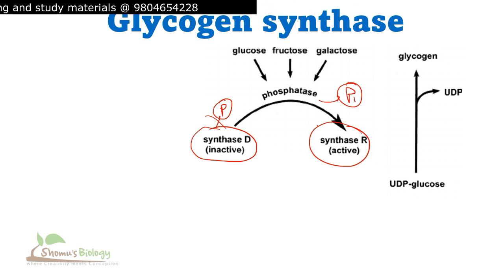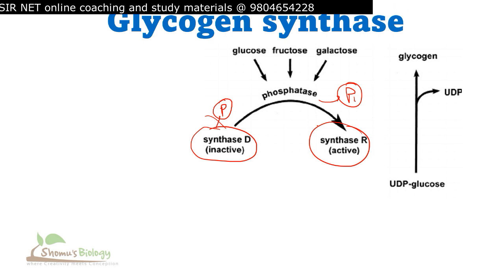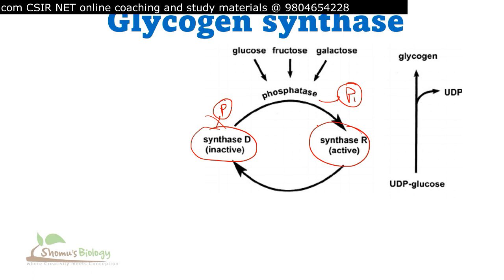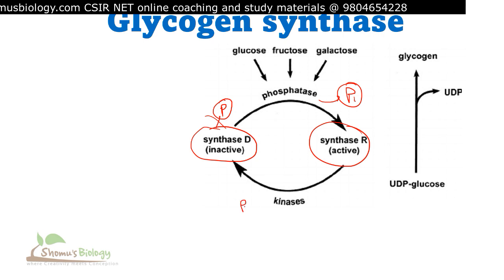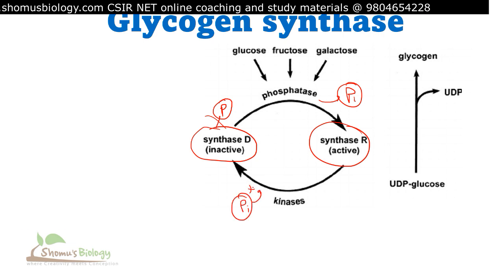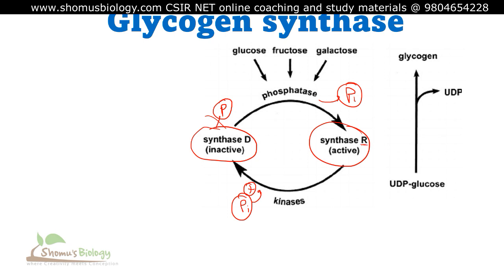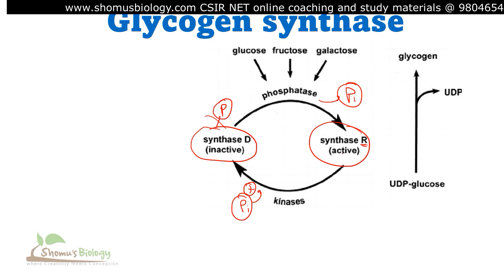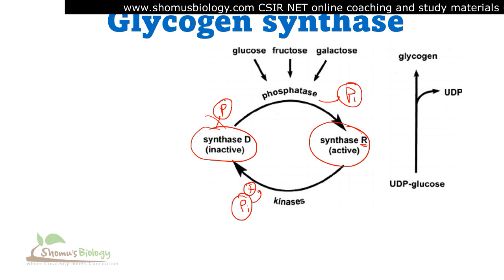Now, this active form of glycogen synthase should not be present always, because sometimes you also need to break down glycogen to produce glucose. In that case, glycogen synthase needs to be converted into its inactive form, and that is done by another set of enzymes known as kinases. A kinase attaches a phosphate group to the active R form, and once the phosphate group is attached, the R form of glycogen synthase is converted to the D form, which is the inactive form. So the glycogen synthase enzyme will be inactivated.